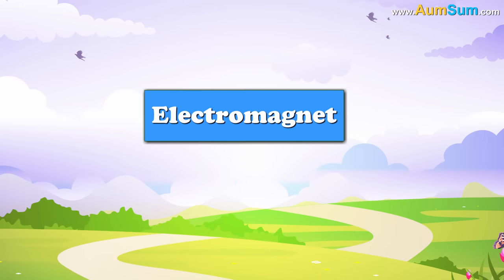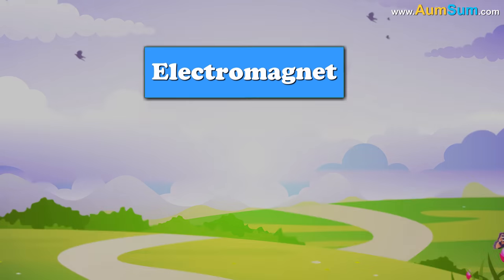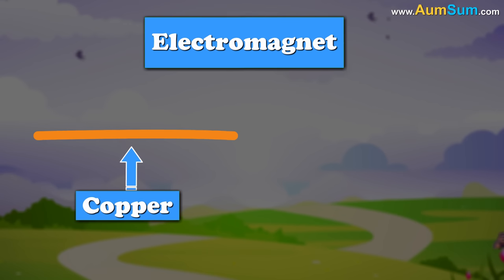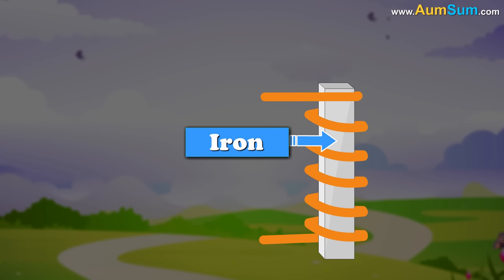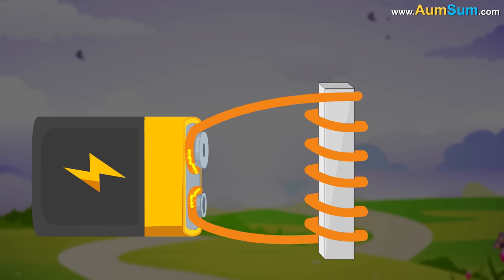The construction of an electromagnet is very simple. A conductive wire, usually made of copper, is wrapped around a piece of metal. In this case, iron. Now with the help of a battery, a current is introduced.